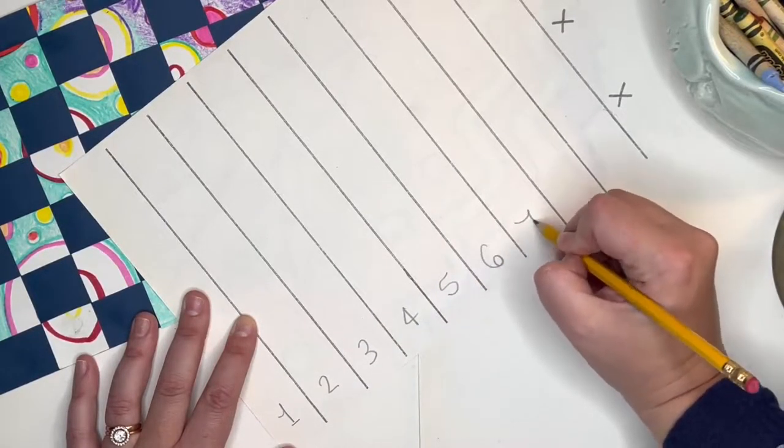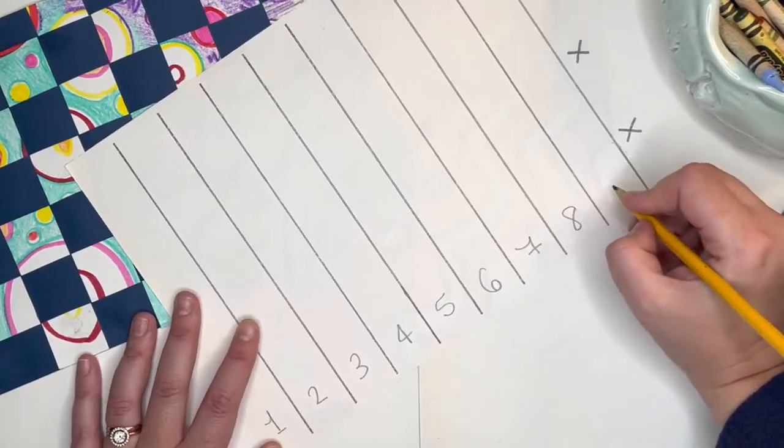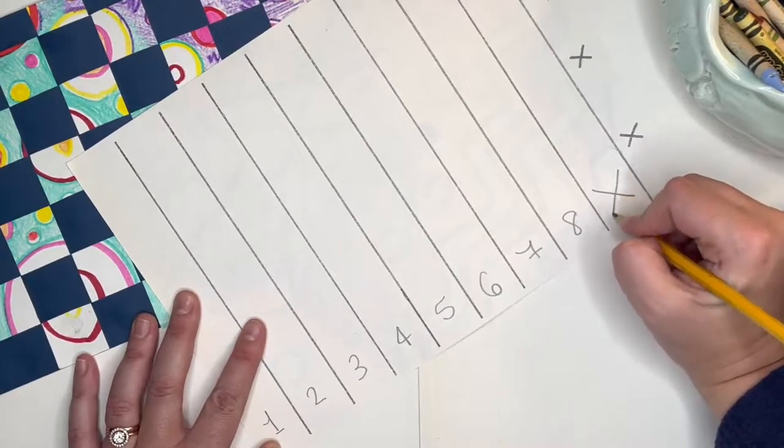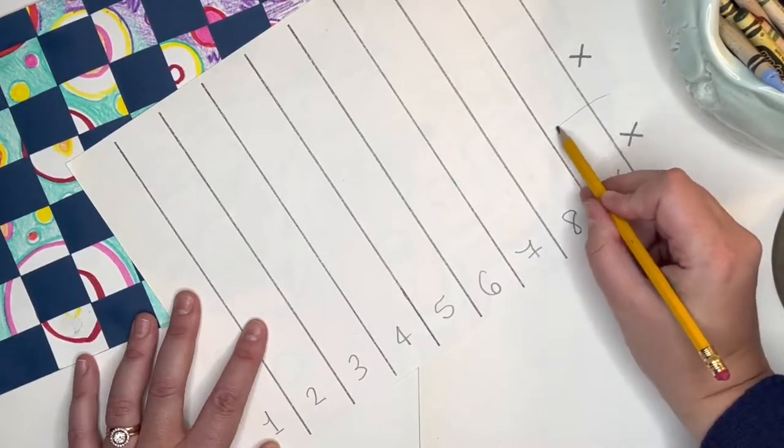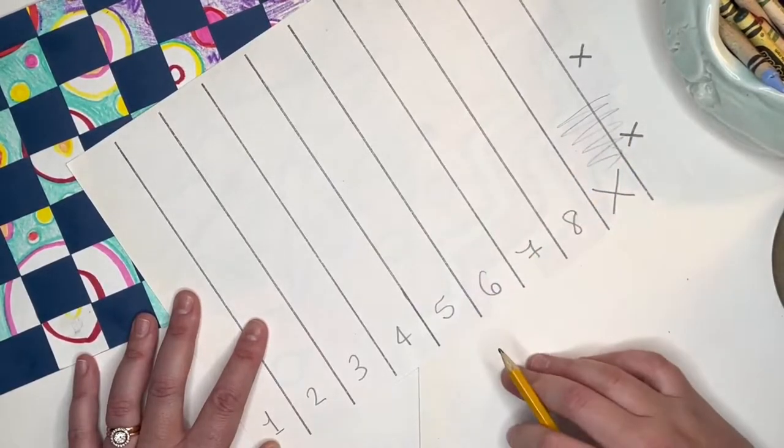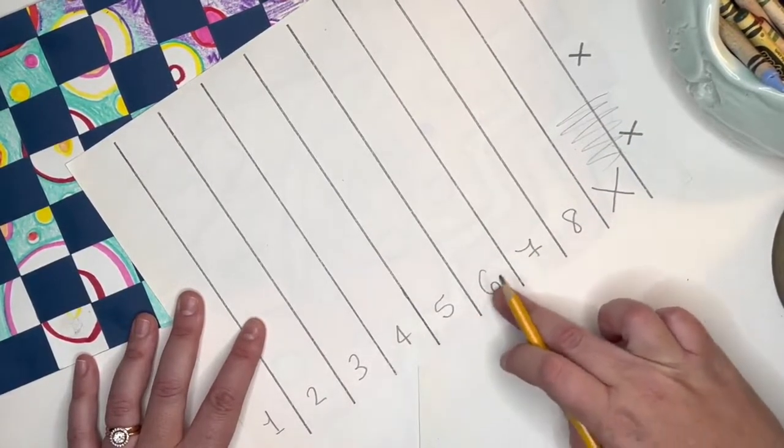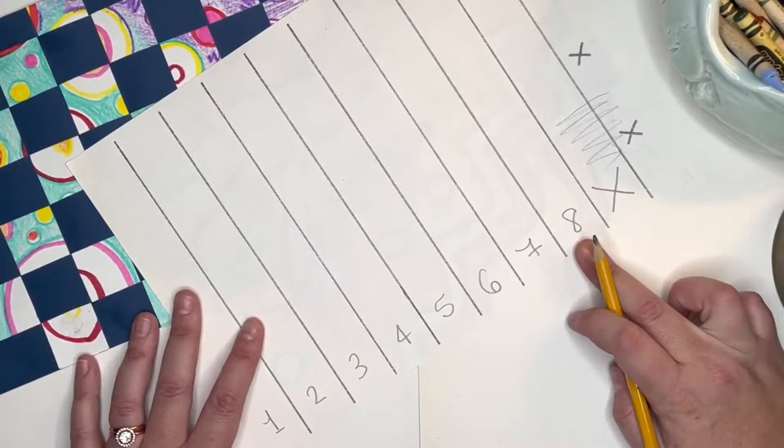five, six, seven, eight, and I want you to write another X because we will not be using these two strips of paper. We will only be using strips one through eight.